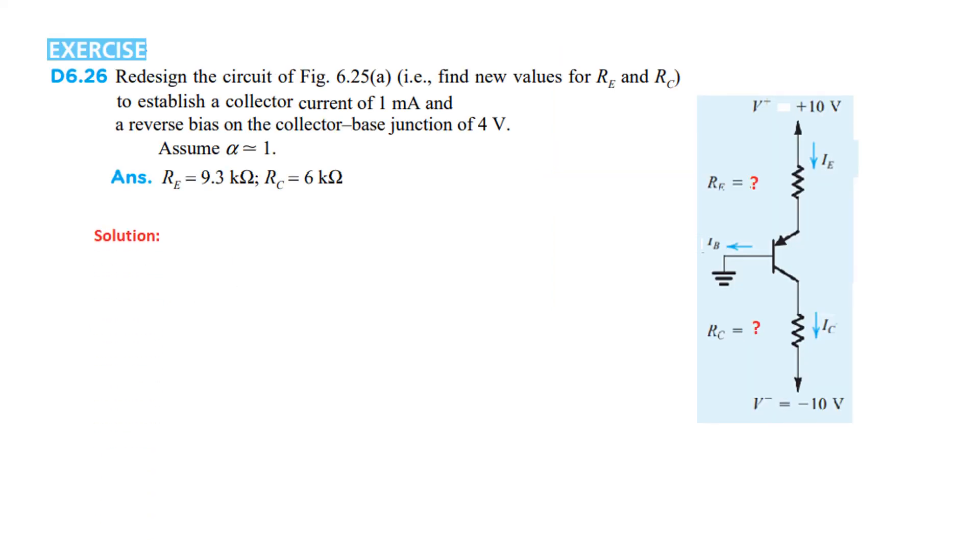Now, let's see 6.26. Redesign the circuit. That means, find new value of RE, RC. To establish a current of 1 milliampere, collector current 1 milliampere. And, a reverse bias on the collector base junction of 4 volt. Now, this voltage will be 4 volt. Assume alpha to be 1. Now, this diagram again, here now definitely it is no more minus 4. It is actually 4. Given here, reverse voltage, 4 volt.